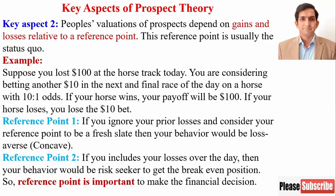Your behavior in that case is loss-averse. But if you think that without taking the risk you will lose $100, you may decide to play. In prospect theory, therefore, value is measured over gains and losses relative to a reference point. However, in expected utility theory, utility is measured as a function of absolute wealth.